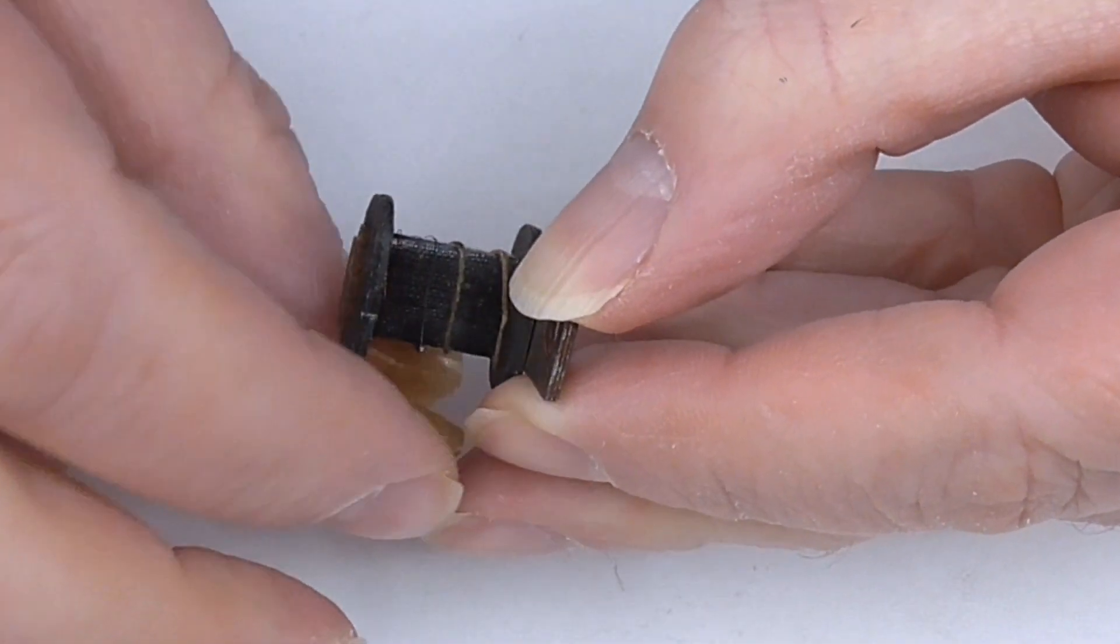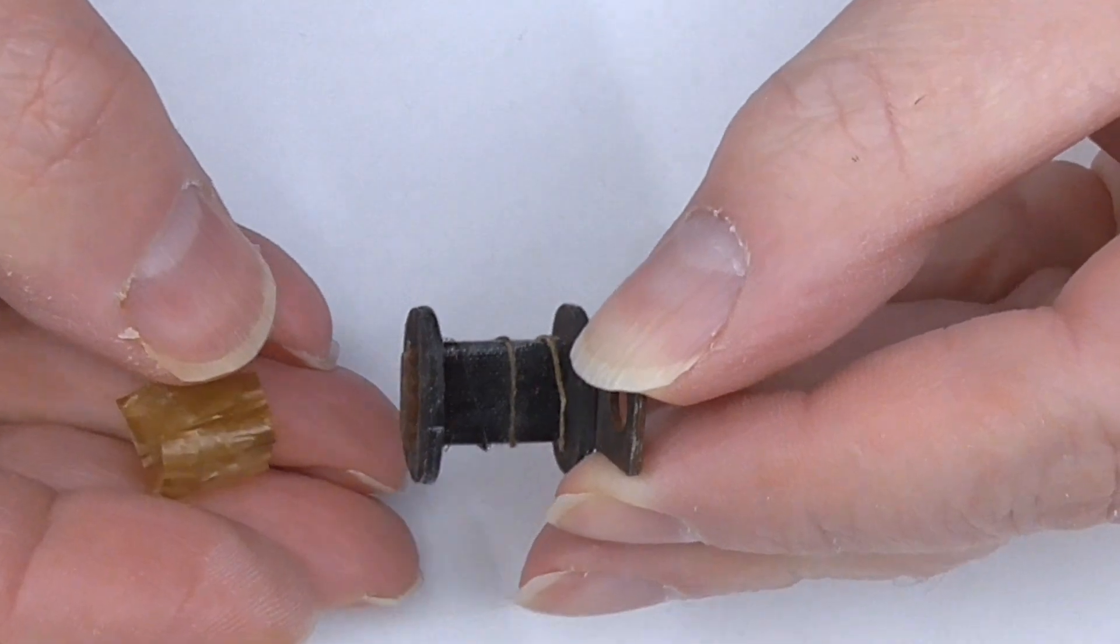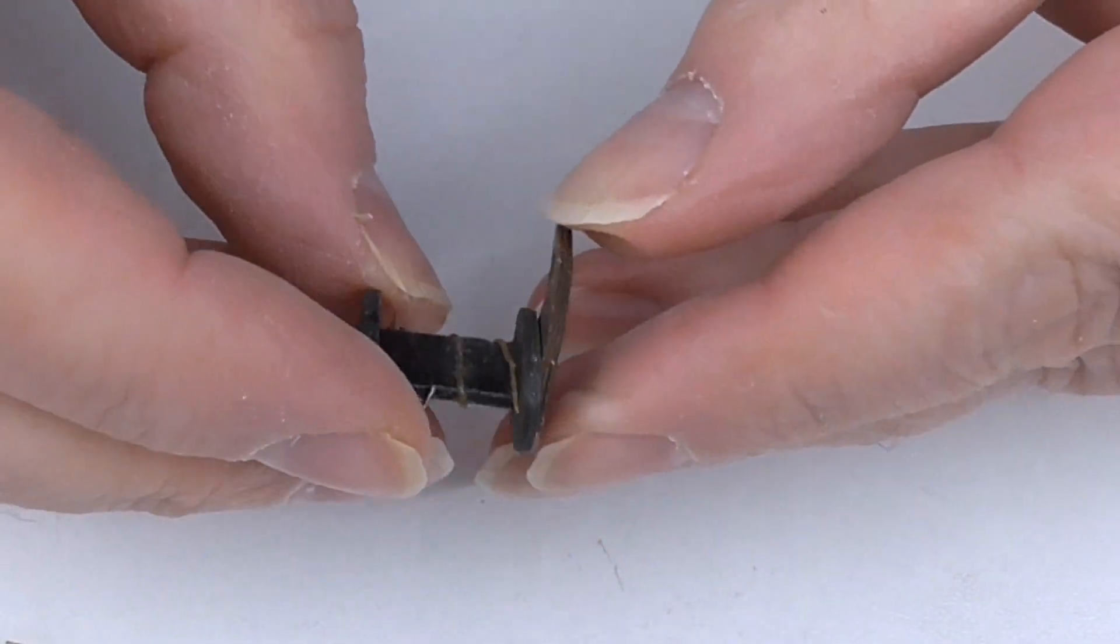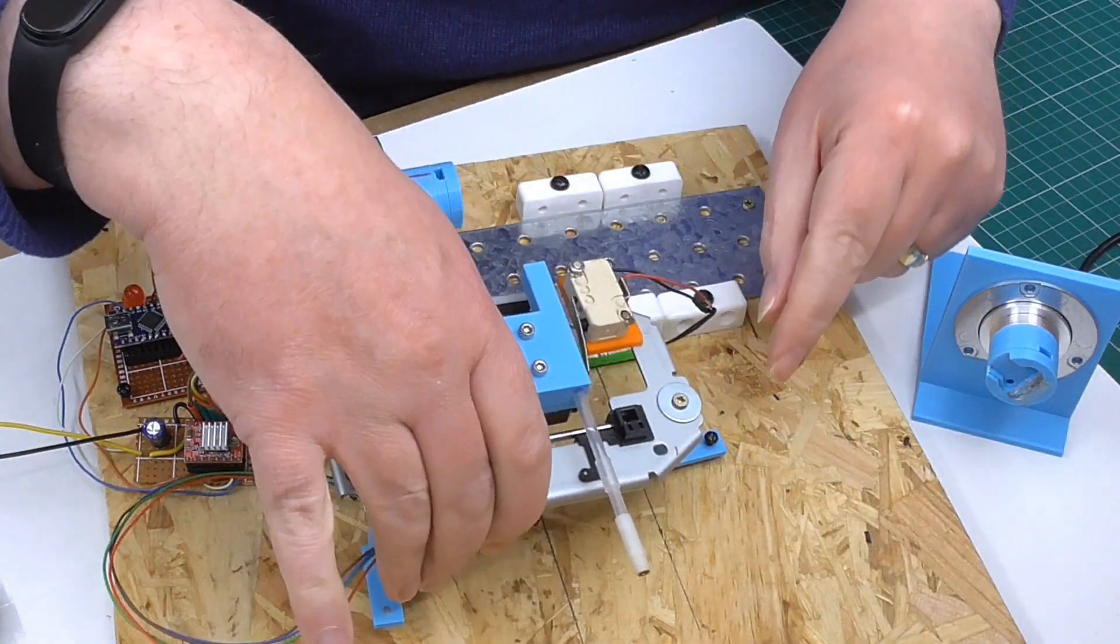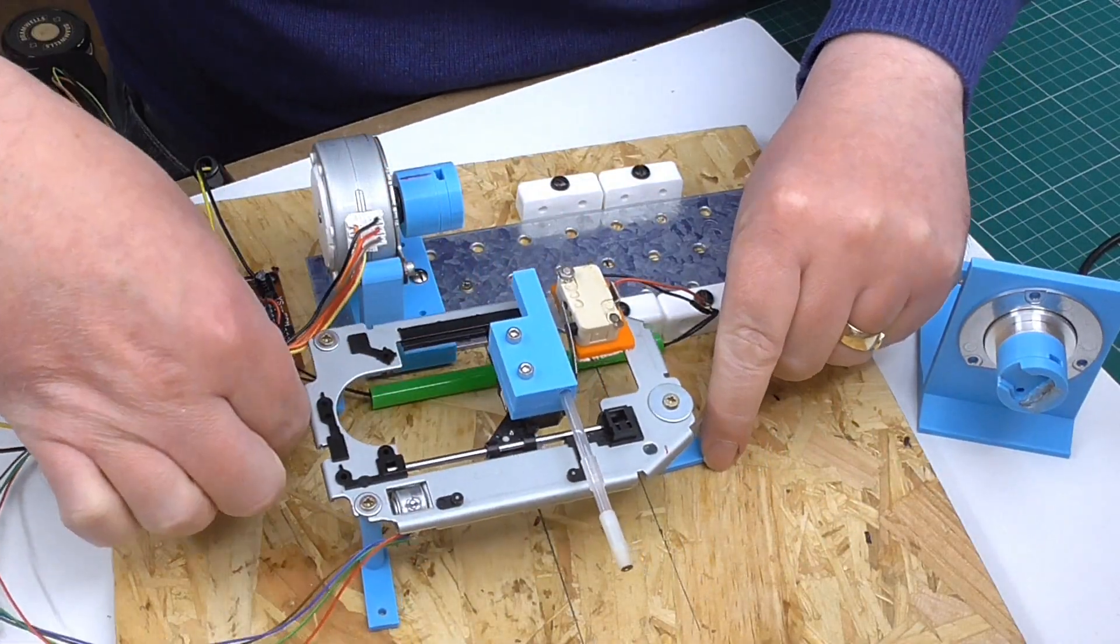Now the wire is off you can see it was joined to a thicker connecting wire. The join being insulated with some sort of tape. Time now to fit the other motor which spreads the wire across the spool.